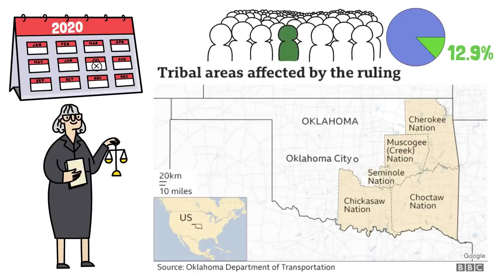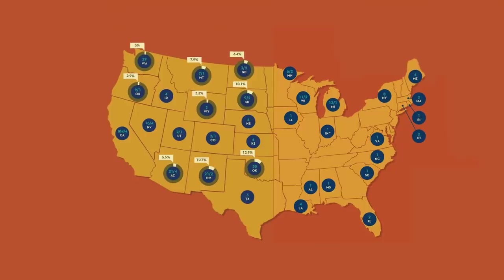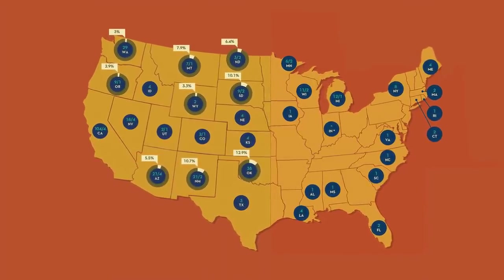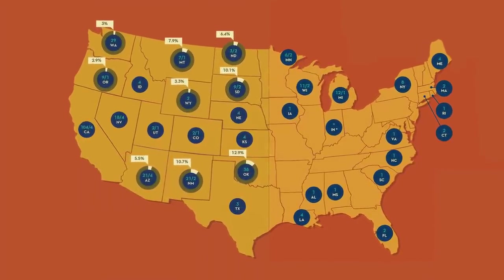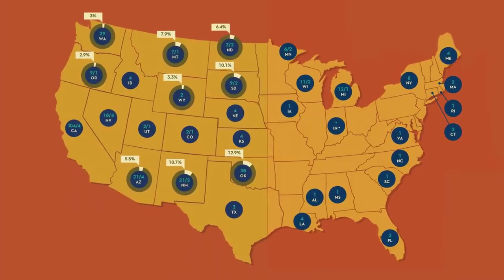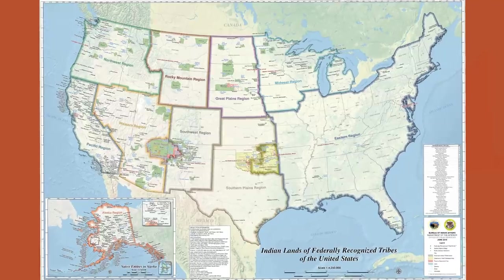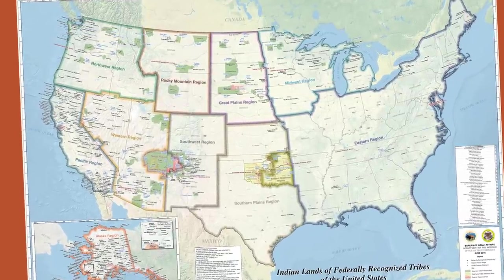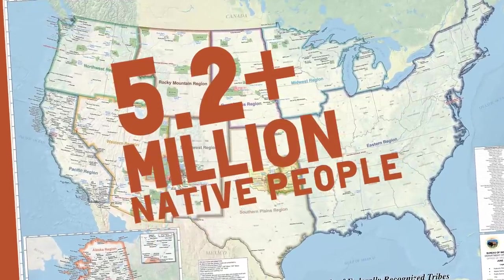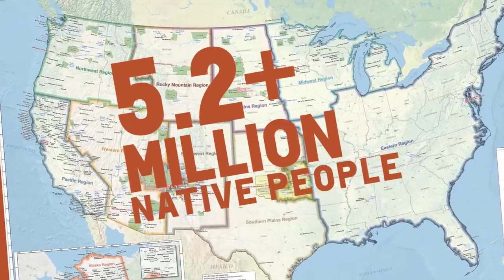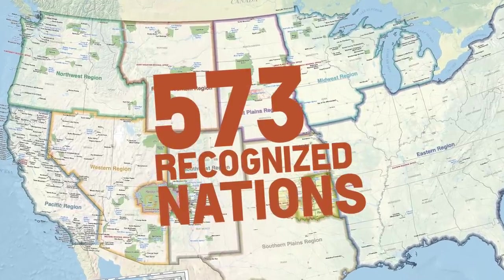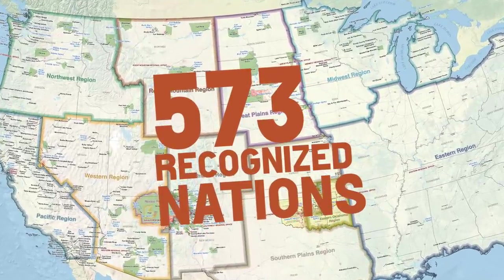The biggest percentage of Native Americans countrywide live in Oklahoma at 12.9%, followed by New Mexico with 10.7% and South Dakota with 10.1%. In this map, we can see those percentages across states. When it comes to land, Native American nations are now mostly reduced to their reservations. This map shows the Indian lands of federally recognized tribes. There are more than 5.2 million American Indian and Alaska Native people in America and 573 federally recognized Native nations across the country.